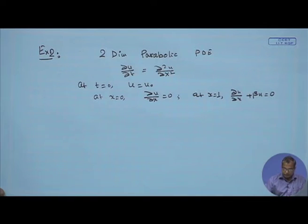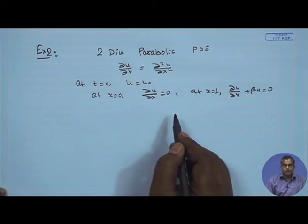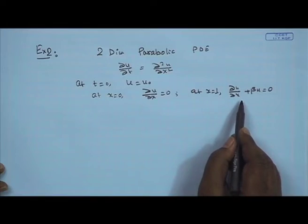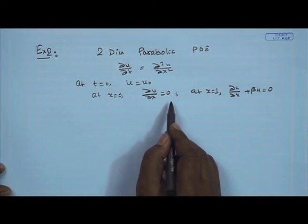At x equal to 1 we have a mixed boundary condition: del u / del x plus beta u equals 0. Previously we looked at problems where both x=0 and x=1 had Dirichlet conditions (first kind), second kind had del u/del x = 0 at x=0 and u=0 at x=1, and third kind had u=0 at x=0 with del u/del x + beta u = 0 at x=1. This new problem has a Neumann condition at x=0 and a mixed condition at x=1.